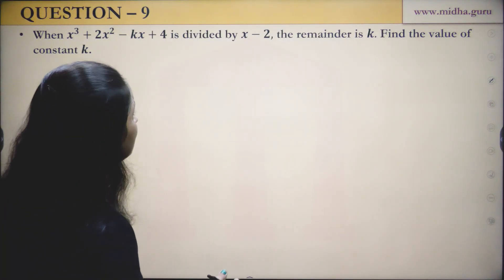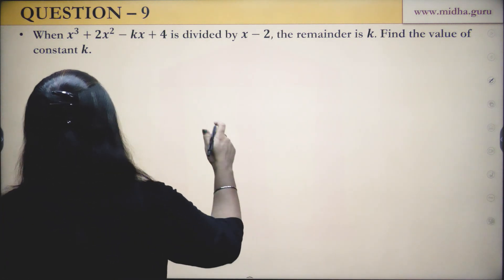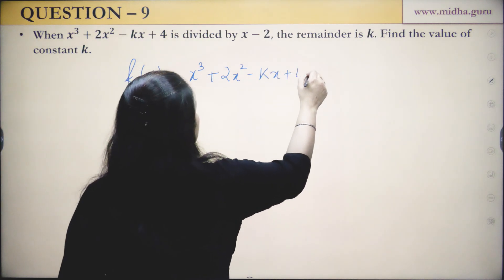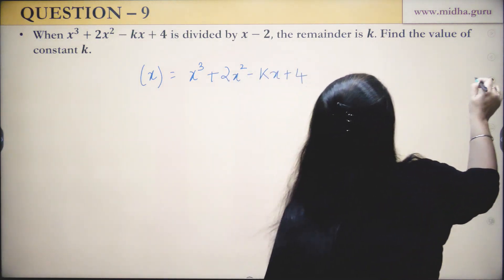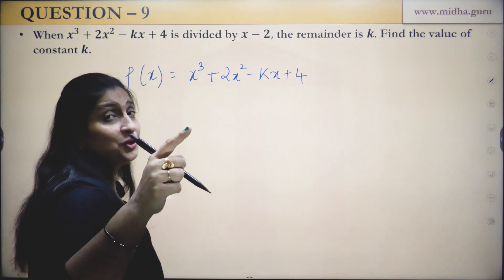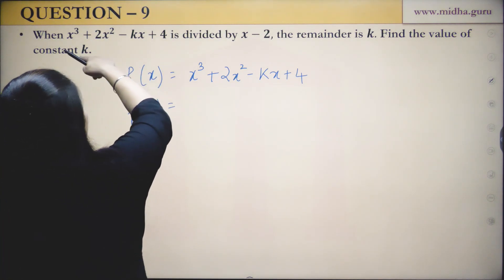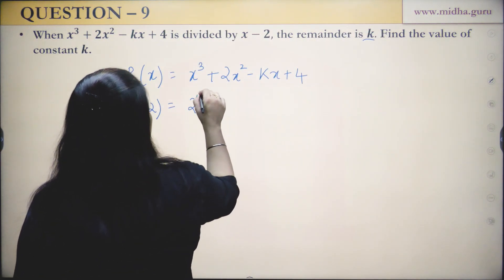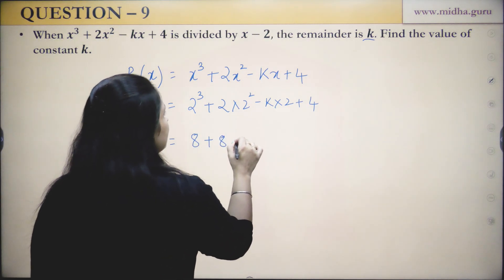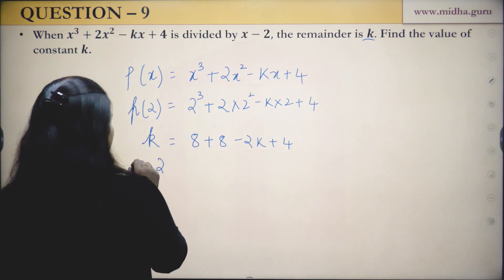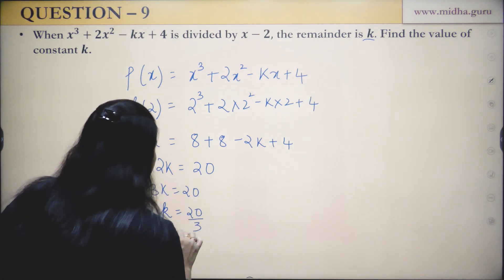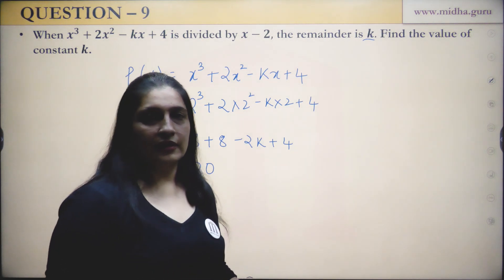Question: When x³ + 2x² − Kx + 4 is divided by X − 2, the remainder is K. Find the value of K. The remainder is p(2): 8 + 8 − 2K + 4 = K. So 20 − 2K = K, giving 20 = 3K, and K = 20/3.